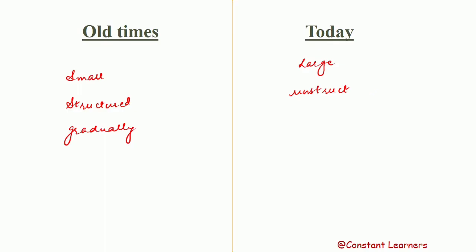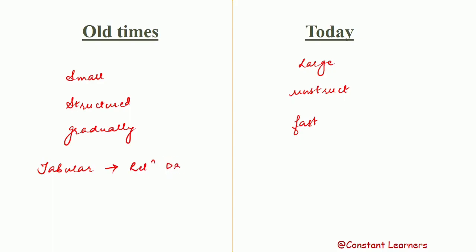Today's data is in the form of text, numbers, videos, audios, images, etc., and it is being generated very, very fast. The small, structured, and gradually generated data of the past could be stored in a tabular format — that is, in relational databases. Relational databases store data in a tabular format with rows and columns, and this relational database stored data in the form of two dimensions.